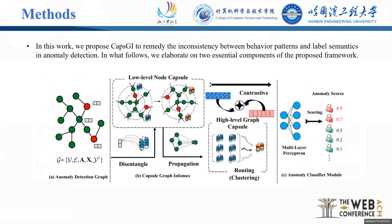In this work, we propose CAPS-GI to remedy the inconsistency between behavior patterns and label semantics in anomaly detection. We elaborate on two essential components of the proposed framework. We first disentangle heterogeneous factors behind the node embeddings to obtain the intrinsic node properties. Then, we propose CAPS-GI to narrow the distribution distance of normal users, but also strengthen the connection between users with the same label. Finally, an anomaly classifier predicts the specific score of nodes.